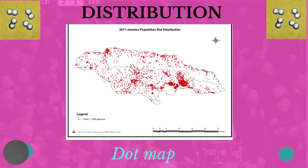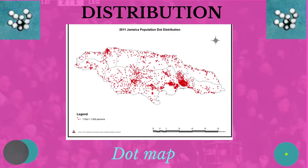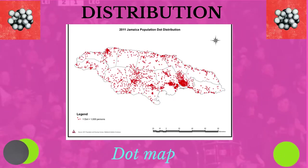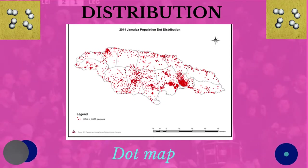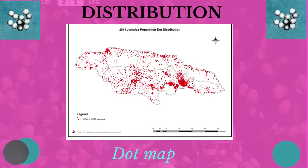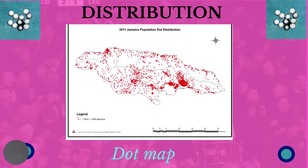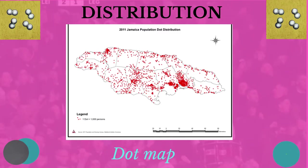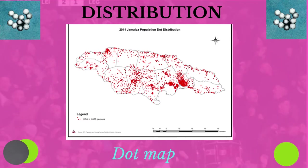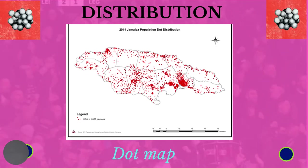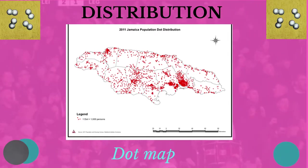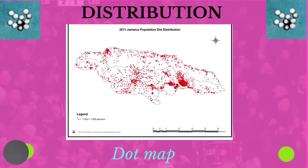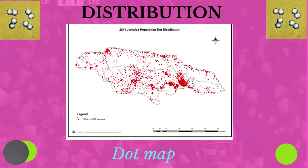Notice that people are mainly located along the coast of the island. Also notice that if we compare the population of Kingston and St. Andrew with the neighboring parish of St. Thomas, we see a clear contrast with more people living in Kingston and St. Andrew. As we study population, we become curious about the reasons for these patterns and try to find the correlation between these locations and other factors.